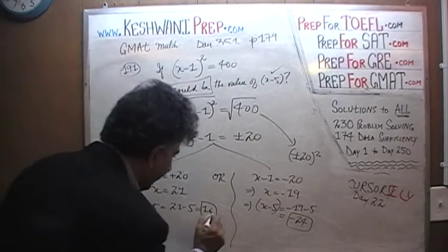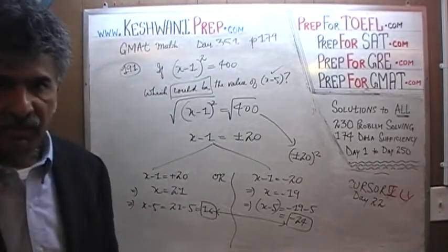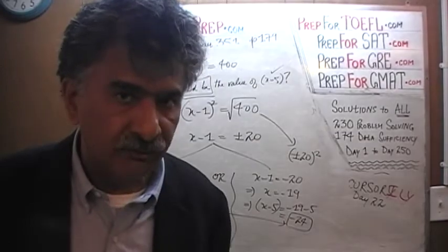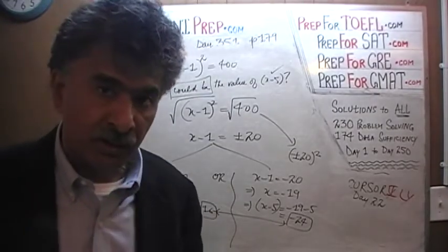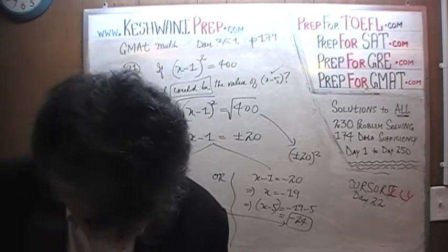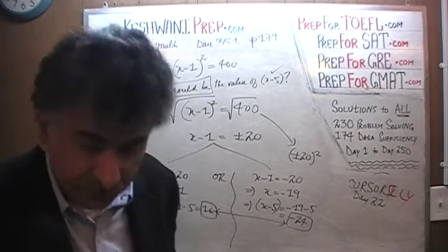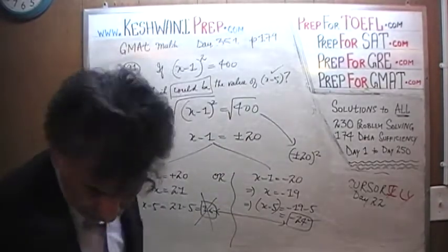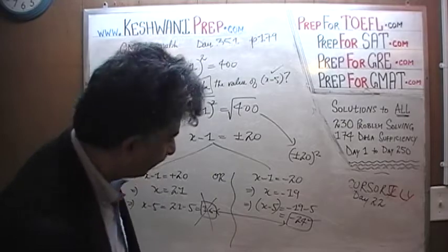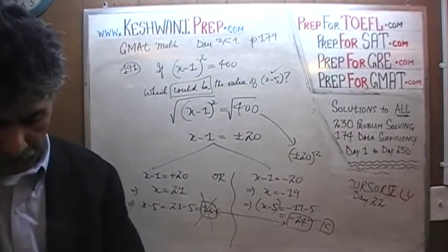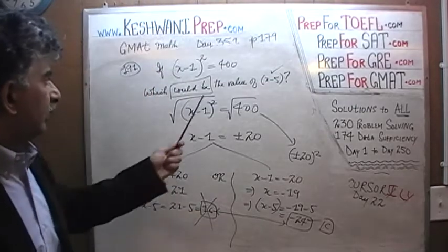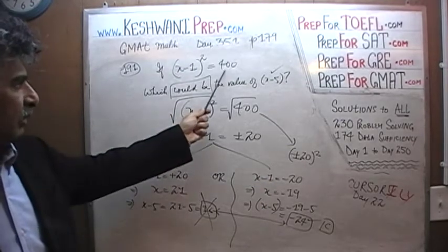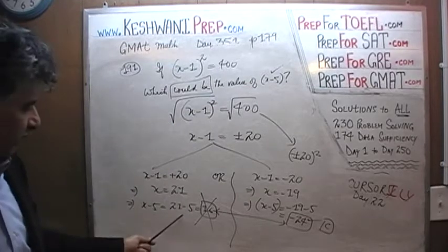Both are possible values of x minus 5. If we look at the 5 answer choices, we will not find both of these values — obviously you cannot have two right answers. Looking at the answer choices for 191, they do not give us 16; 16 does not exist. Which means the answer choice they have is negative 24, which is letter C. They are going to use the negative root, because the whole point is to see if you can realize this equation has two roots: positive 20 and negative 20.